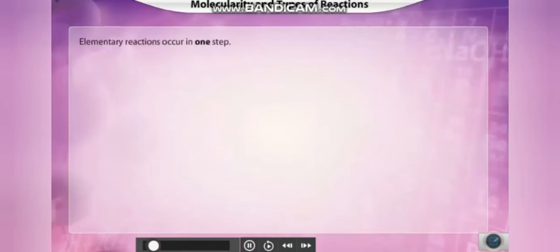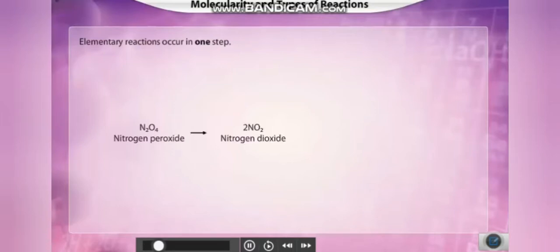Elementary reactions are those which occur in one step. For example, nitrogen peroxide dissociates to form nitrogen dioxide in a single-step reaction. The molecularity of the reaction is one, as one molecule of nitrogen peroxide undergoes change to form the product.